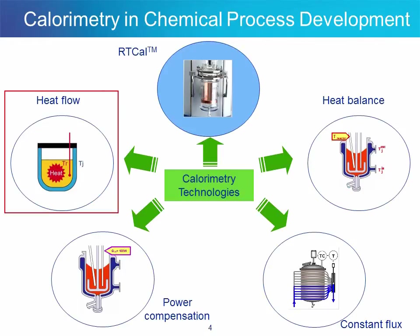This slide lists most of the available calorimetry technologies on commercial or scientific devices today. The method that has over the years proven the most robust and is predominant today on the market is undoubtedly heat flow. Heat flow is available on the famous RC1, as well as on other devices from other companies. Heat flow is based on the simultaneous measurements of the reaction temperature TR and jacket temperature TJ.